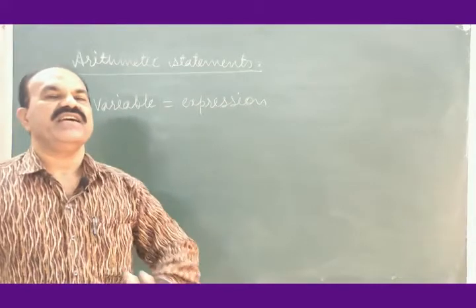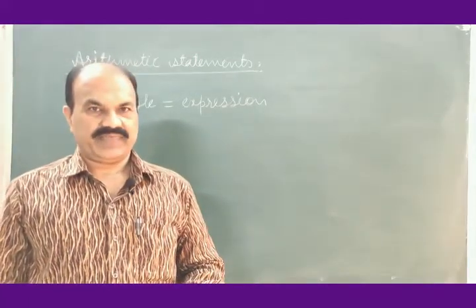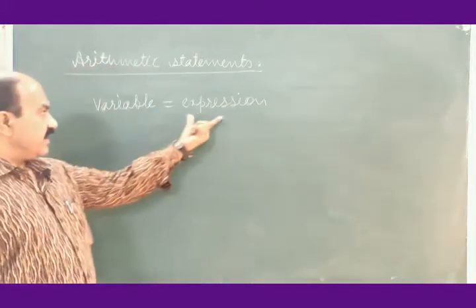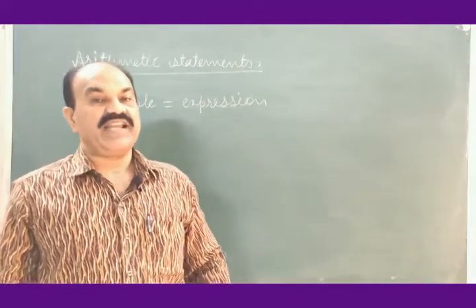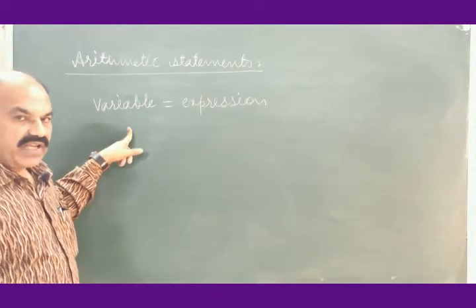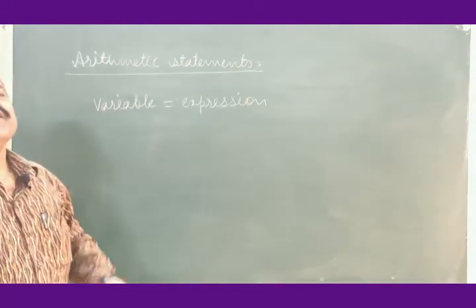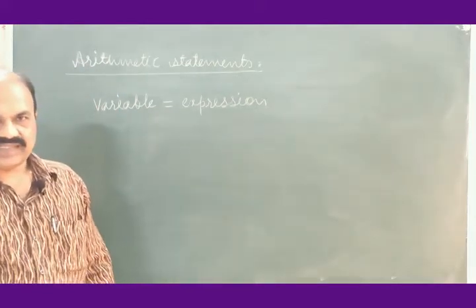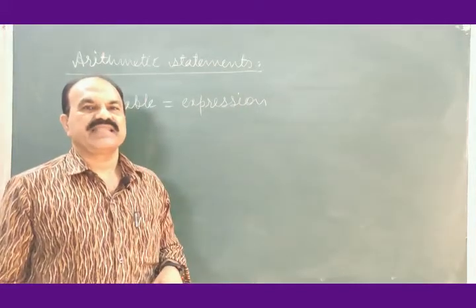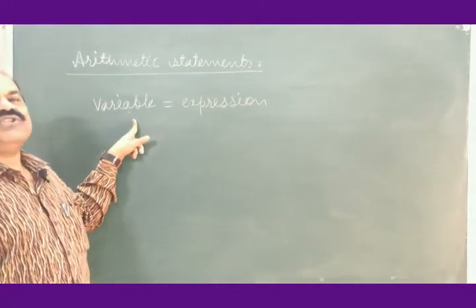The format of an arithmetic statement in Fortran is: variable is equal to expression. The LHS is any single numeric variable — it may be an integer variable or a real variable. The expression on the RHS should be a valid Fortran expression. Between the single numerical variable and the arithmetic expression, we put an equal-to sign. It means that Fortran evaluates this expression and the result obtained will be given to this variable.